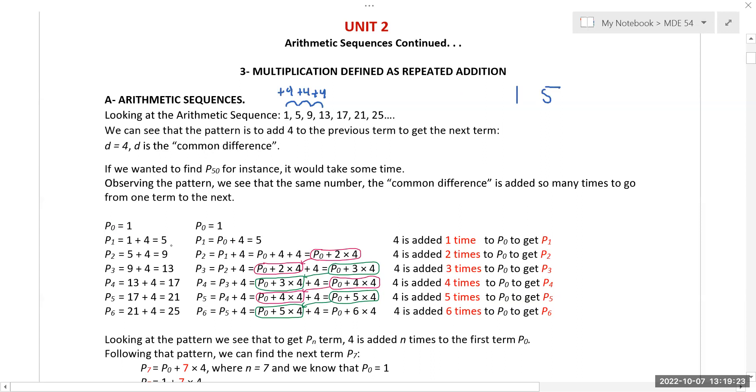To go from 1 to 5, you added 4 one time. To go from 5 to 9, you really added 4 two times, so we can rewrite that as 2 times 4. To go to 13, we were adding 4 three times. If we're on the fourth one, we're adding it four times.